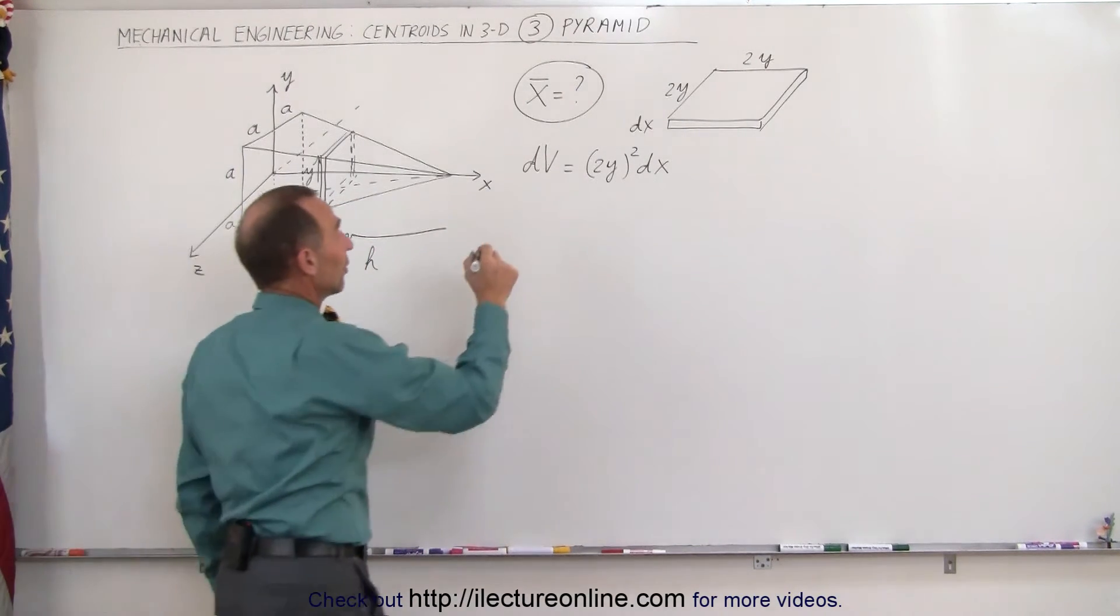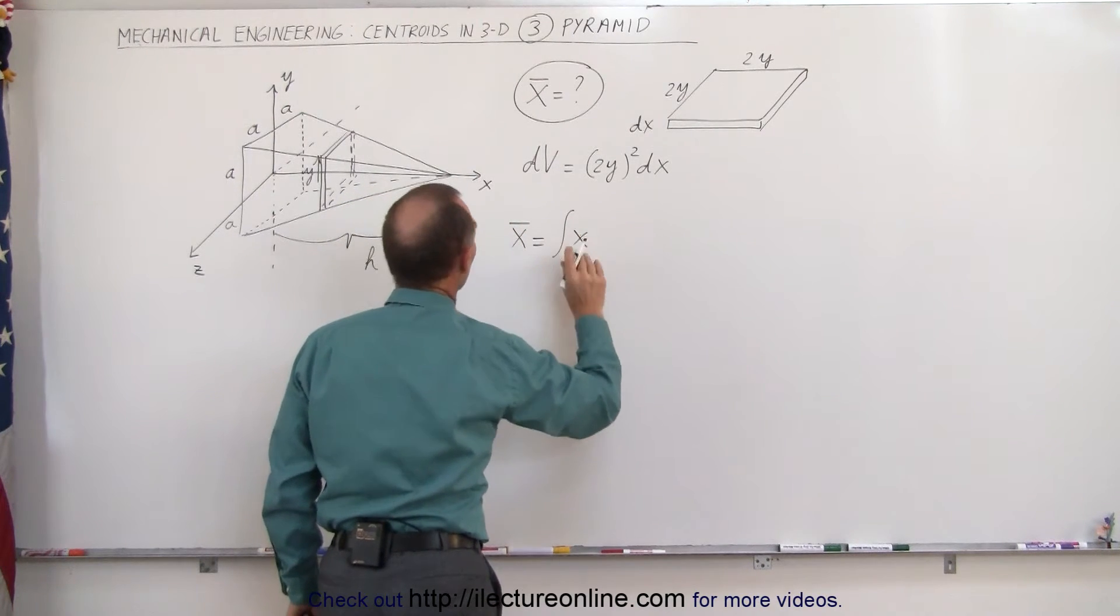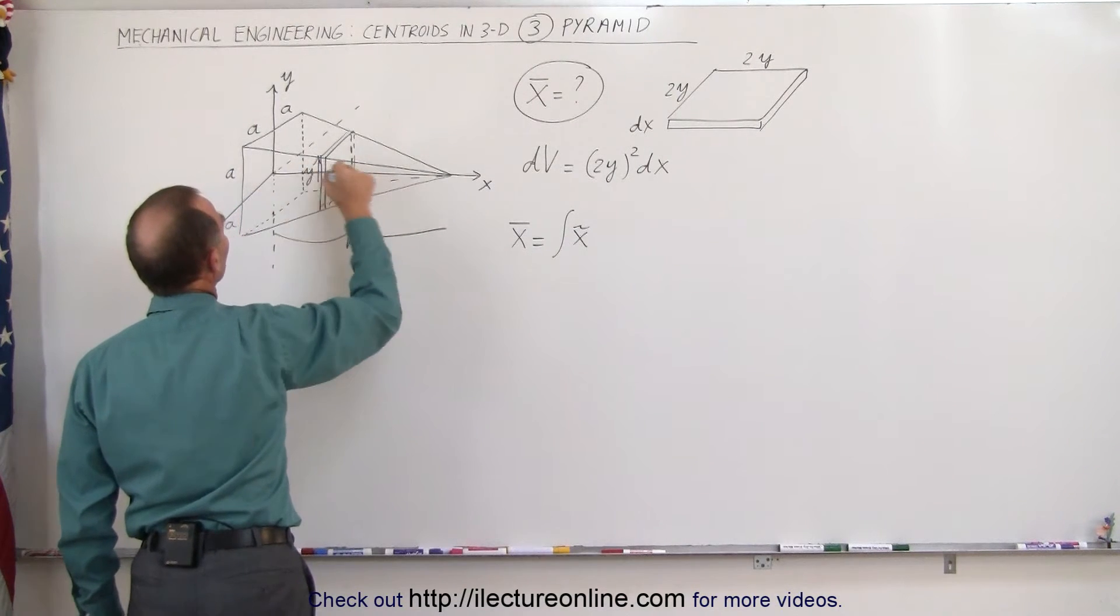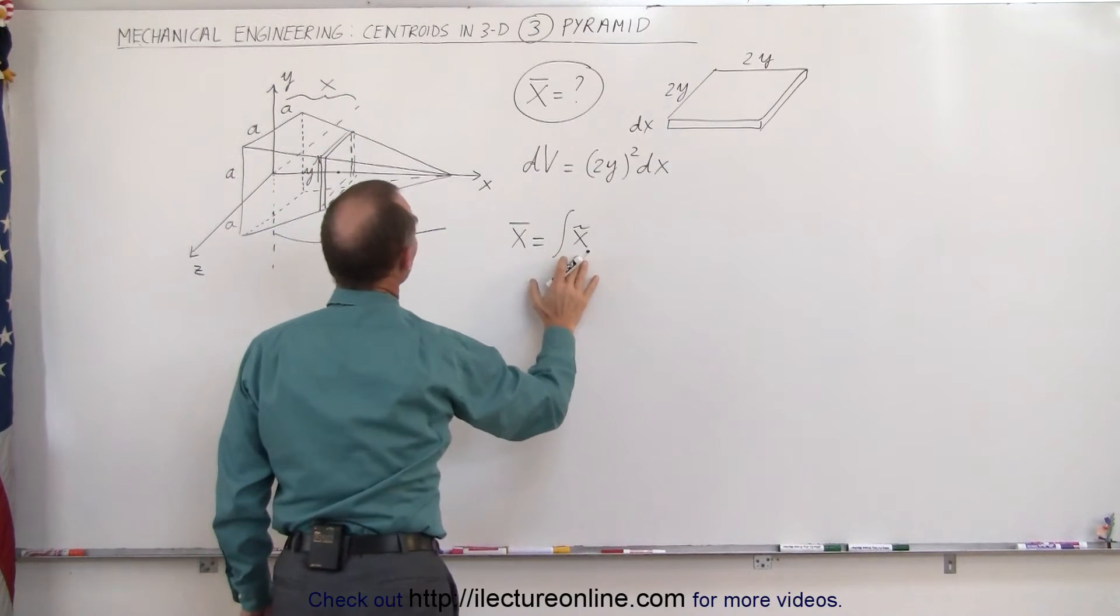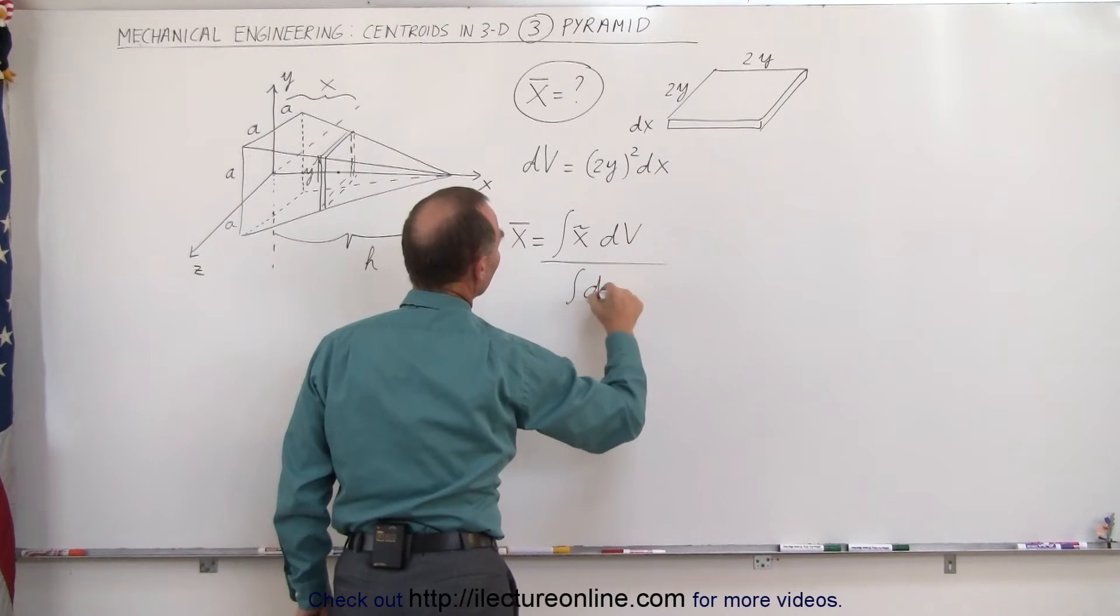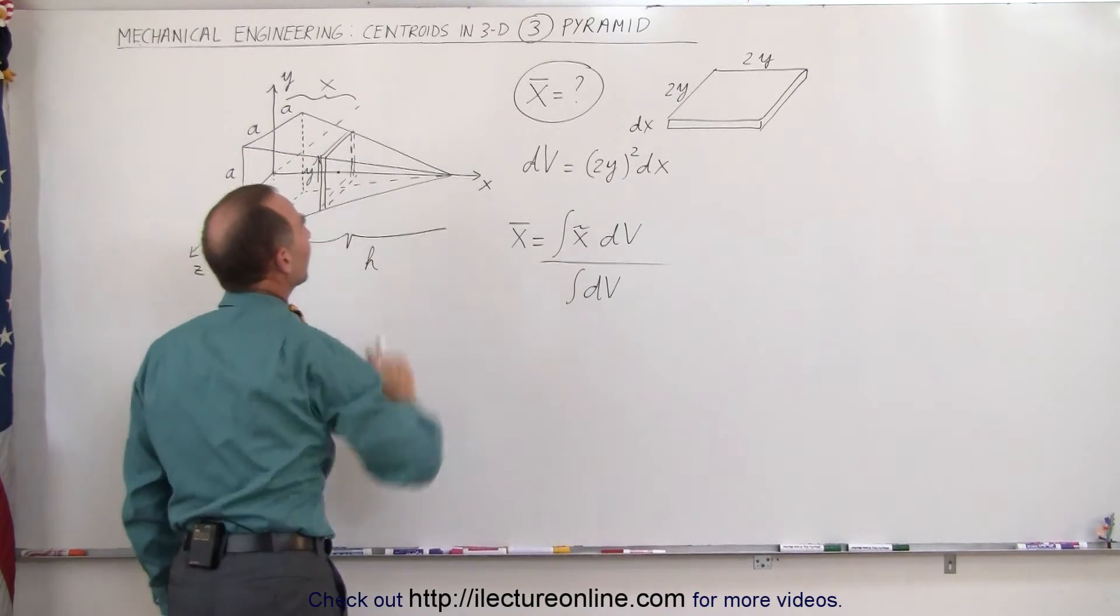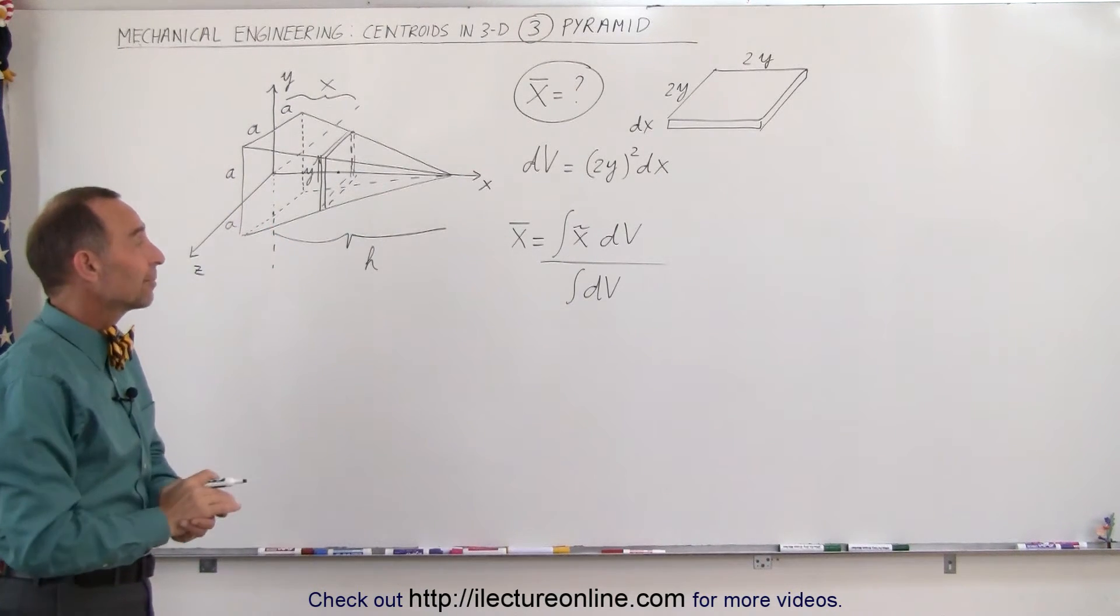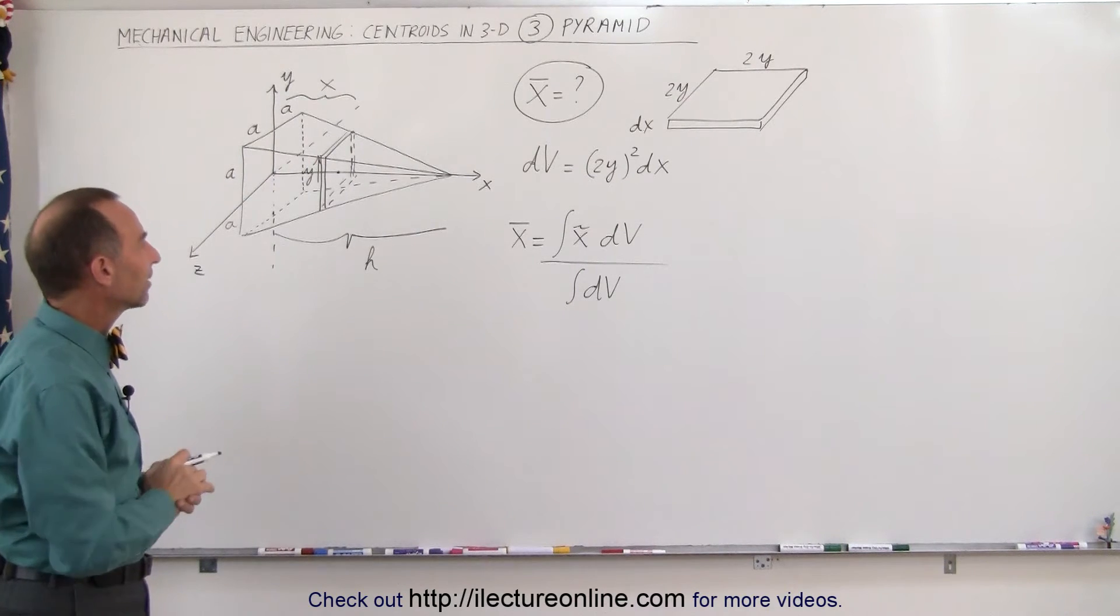To find the x-coordinate of the centroid, the equation that we use is equal to the integral of the x-coordinate of the slice, a distance x away from the origin, multiplied times the dV, and we divide that by the integral of the dV. The integral of dV represents the volume of this pyramid. The volume of the pyramid is one-third the base times the height. So we can replace the integral of dV in the denominator by one-third the base times the height.